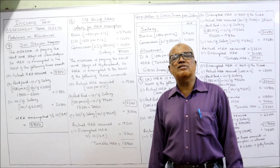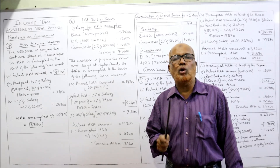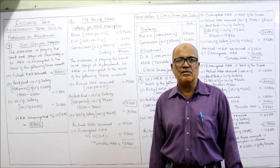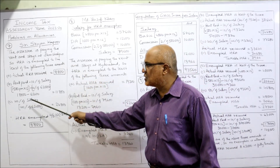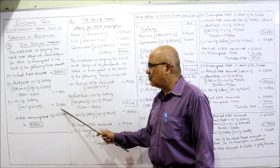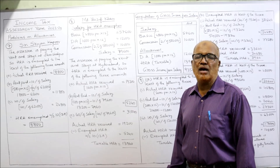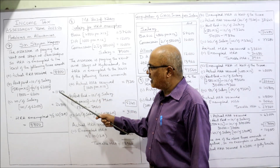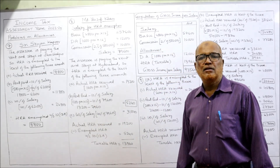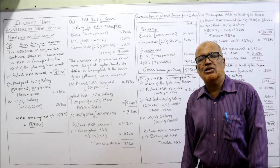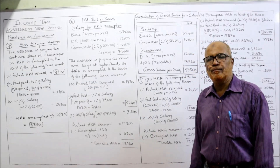Third: 40% of salary for other towns, 50% for four metropolitan cities (Delhi, Mumbai, Chennai, Kolkata). Jamshedpur is other town, so 40% of ₹62,000 = ₹24,800. The three amounts are ₹8,800, ₹11,800, and ₹24,800. The least is ₹8,800. Therefore HRA exempted under Section 10(13A) is ₹8,800. This completes the 7th problem.